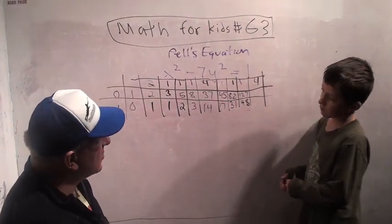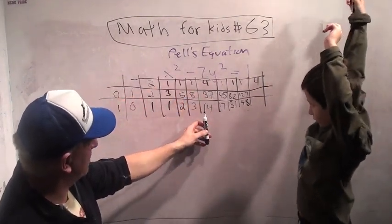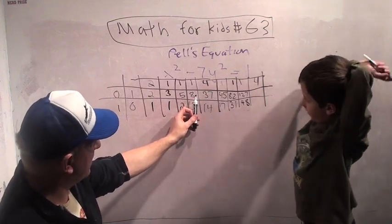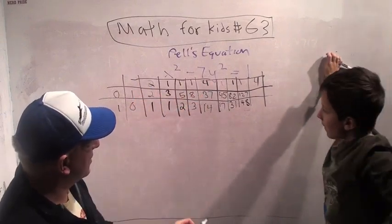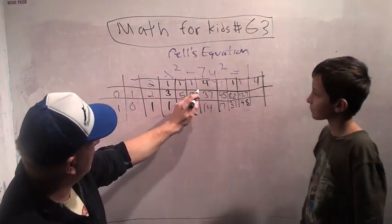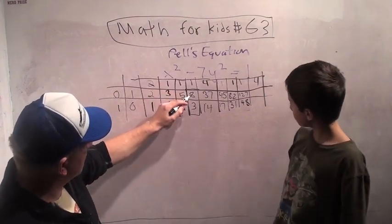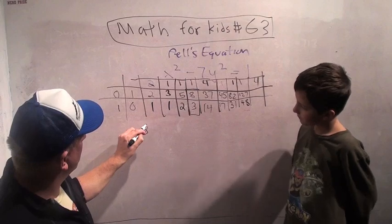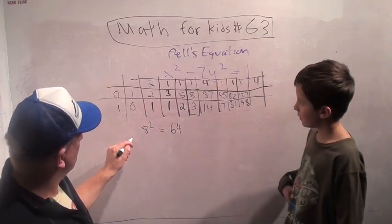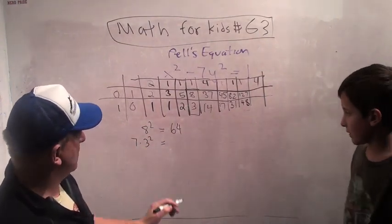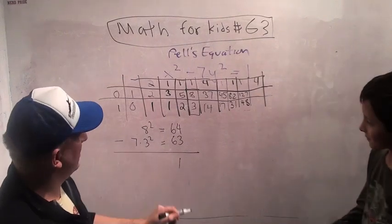Now here's another magic thing about continued fractions. Whenever this fraction, whenever our expansion starts repeating, right before it starts repeating, and I'll explain what that means, it really starts repeating at the 4. Right before it starts repeating, these numbers solve our equation. So let's look. The top one's going to be X, the bottom one's going to be Y. What's 8 squared? It's going to be 64. What's 3 squared? 9. So what is 7 times 3 squared? It's 63. So 64 minus 63 is 1. Whoa!